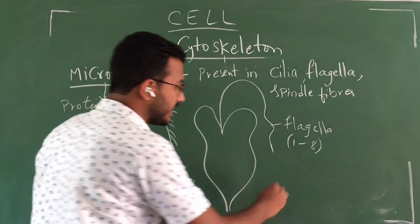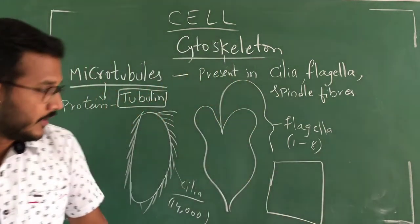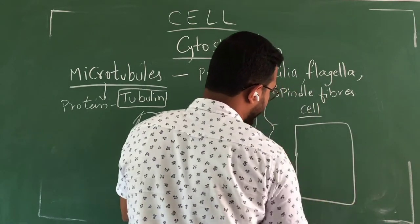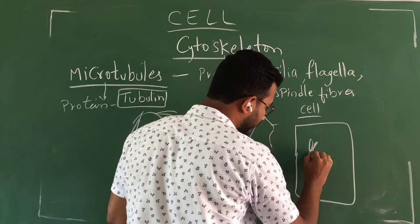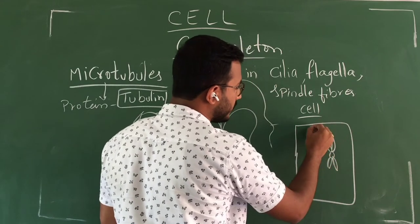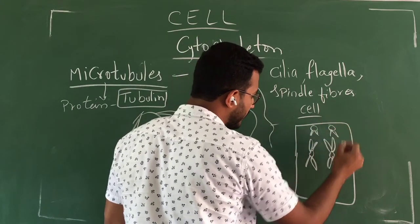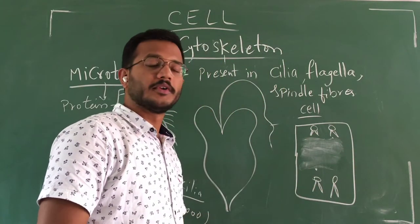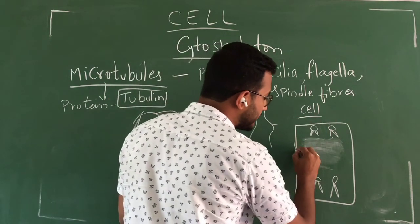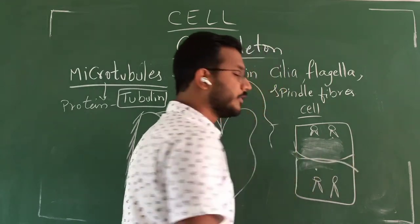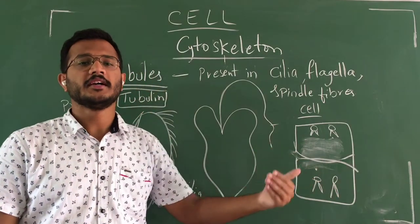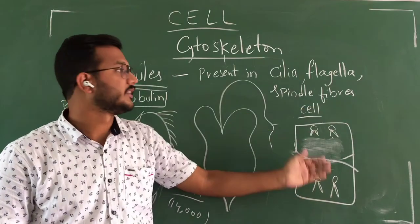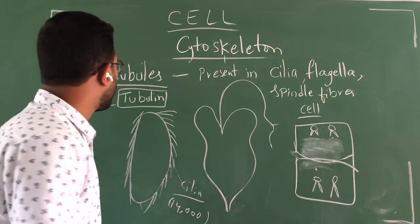Spindle fibers are also present in the cell. When a cell is going to divide, the chromosomes have to divide and migrate towards the poles. For the migration of chromosomes, these microtubules will help. Once the chromosomes have migrated to the poles, the cell divides. We will see in detail how the migration and division take place when discussing the cell cycle. So the microtubules are helpful for the migration of chromosomes from the middle to the poles.